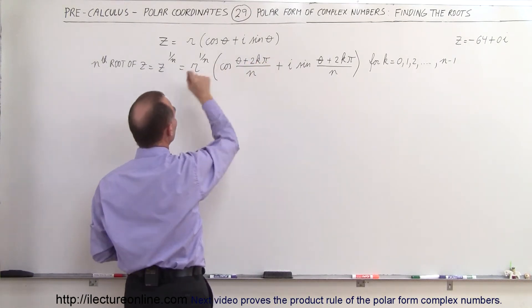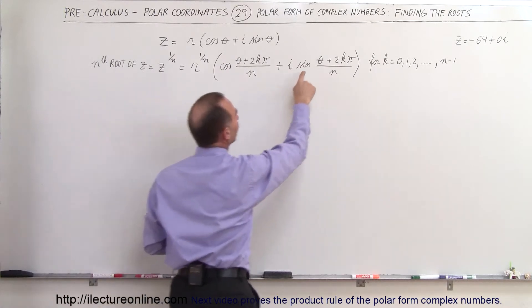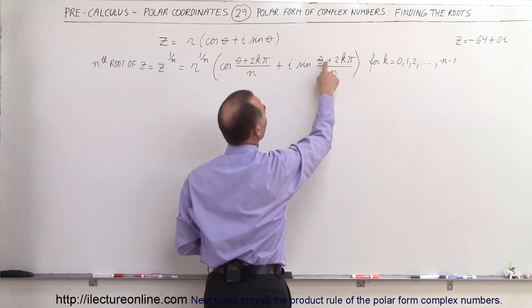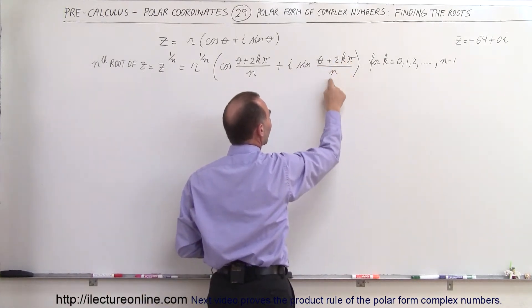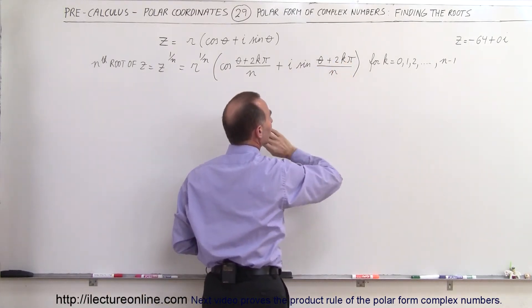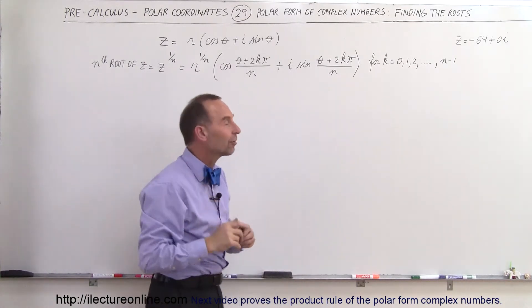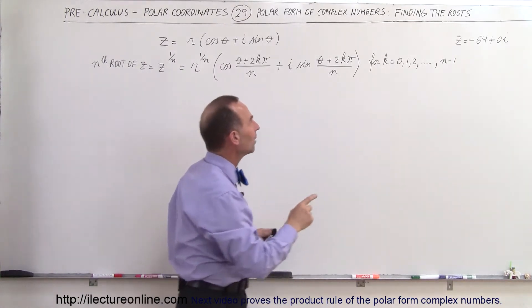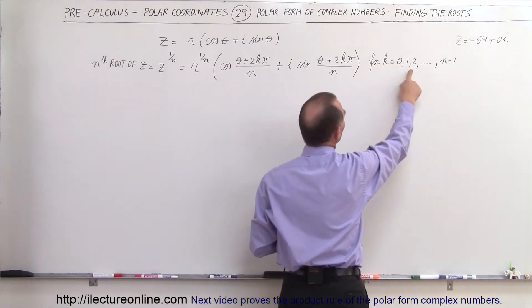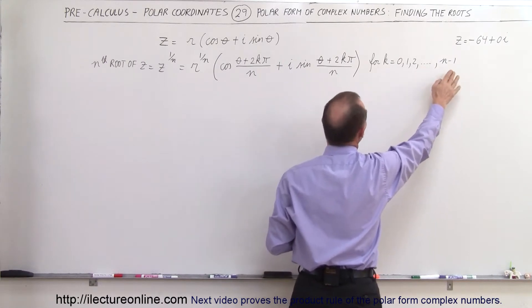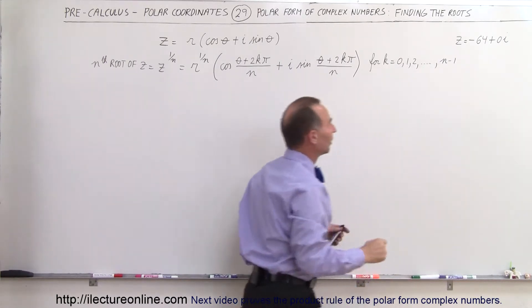Plus i times the sine of theta plus 2k pi over n, for various values of k. k is going to be equal to 0, 1, 2, 3, 4, 5, and so on, all the way up to n minus 1.